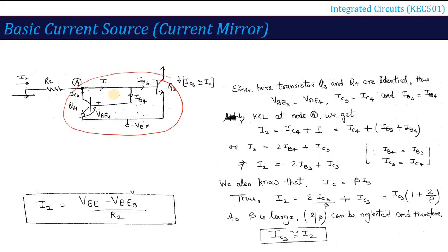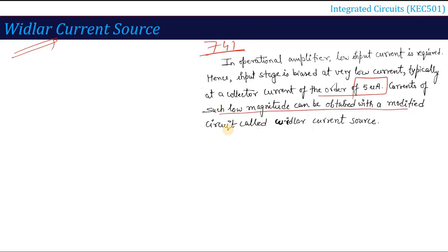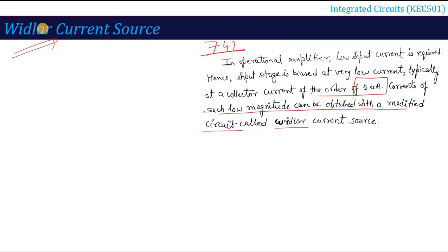To improve this current mirror concept, the next topic is the Widlar current source. For the operational amplifier 741 IC, the input stage requires very low current — typically a collector current on the order of 5 microamperes. This low magnitude current can be obtained with a modified circuit called the Widlar current source. I will make a small modification to the current mirror circuit to create the Widlar current source.